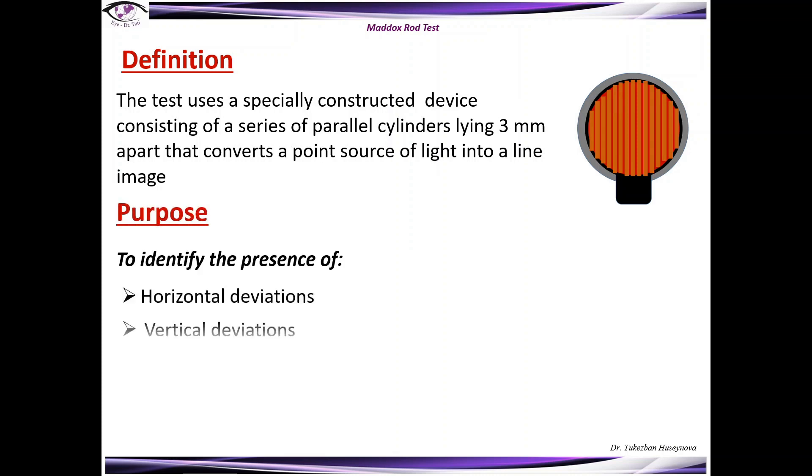The purpose of this test is to identify the presence of horizontal, vertical deviations, torsional deviations as well as latent and manifest tropisms. The prime purpose is to define eye position and the ability of both eyes to fixate on the same object. And we can perform this test at near and for distance.